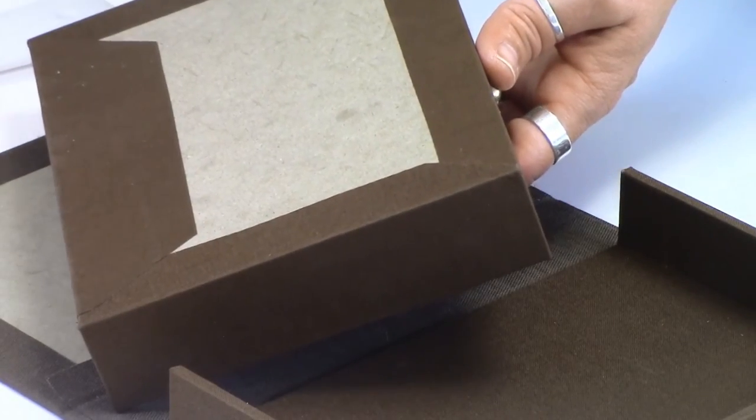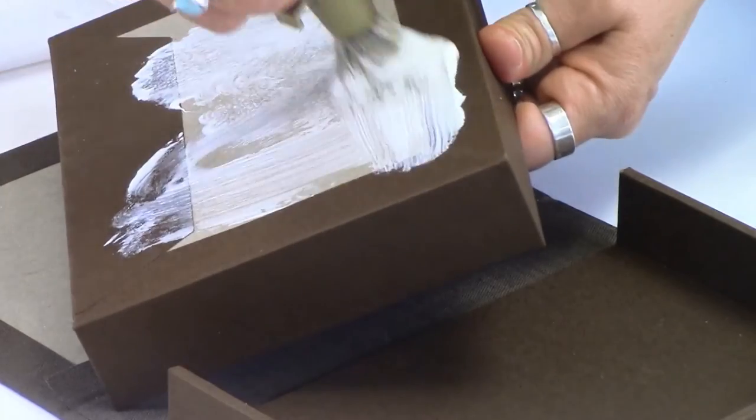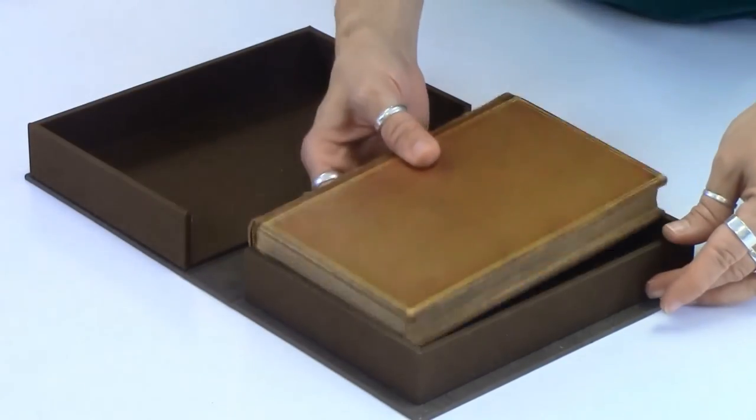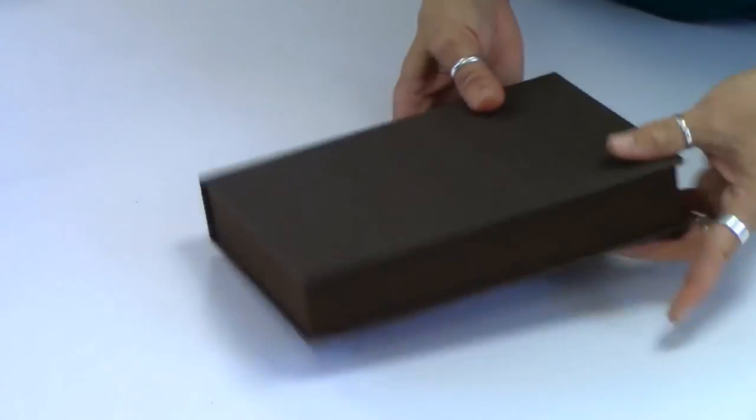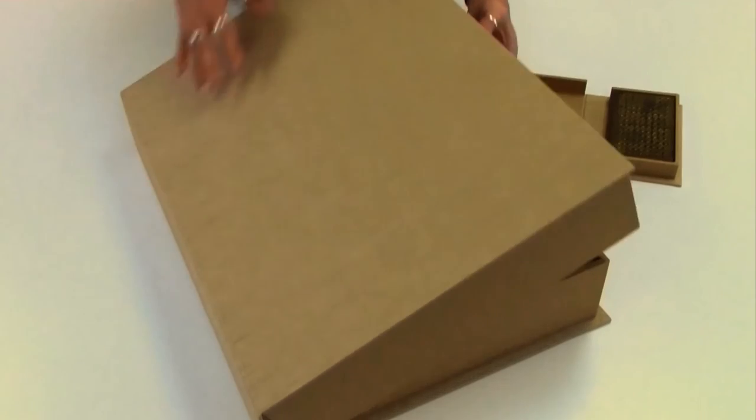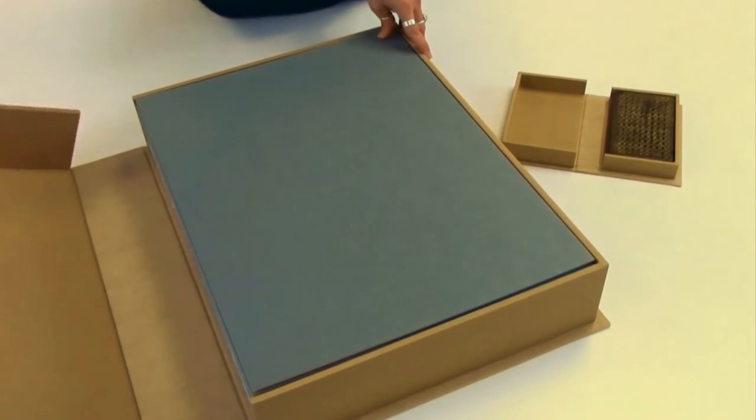Each half is custom-built to fit the item. In this example, both clamshells hold items from our special collections. A book is housed in a smaller box and a collection of medieval manuscripts in the larger box.